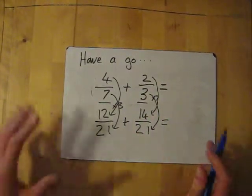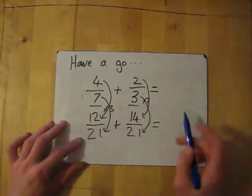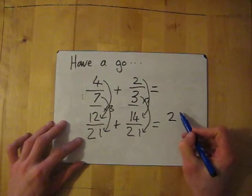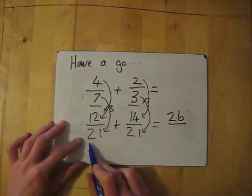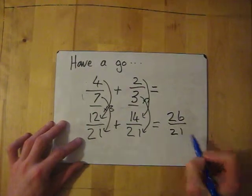And we're adding the fractions. So dead simple. Add the top two numbers. 12 plus 14 is 26. Keep the bottom number the same. Done.